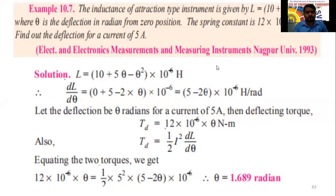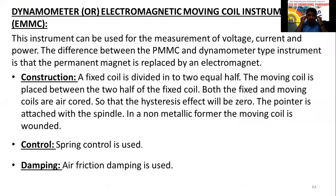We have finished the moving iron instrument in the last class, so today we will discuss about the dynamometer, which we are also going to call EMMC. EMMC stands for electromagnetic moving coil instrument.